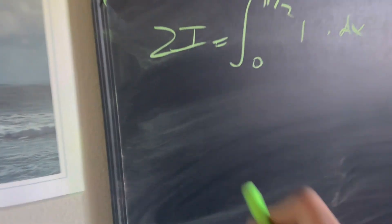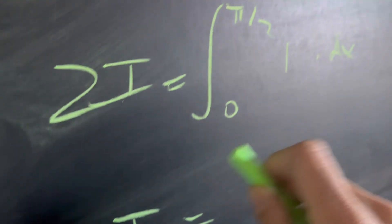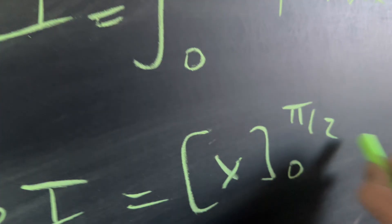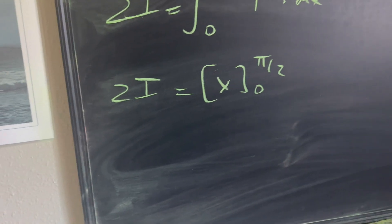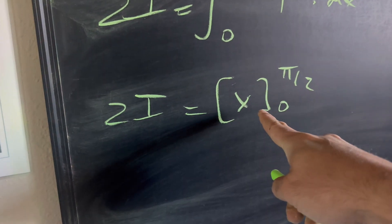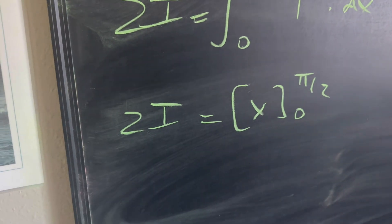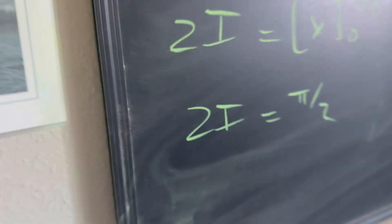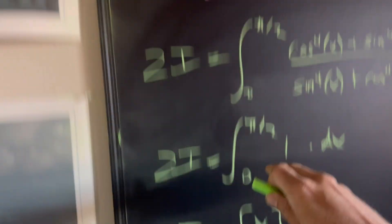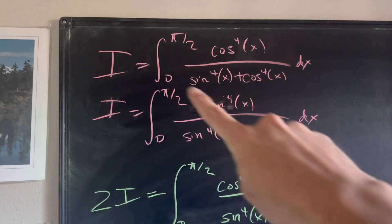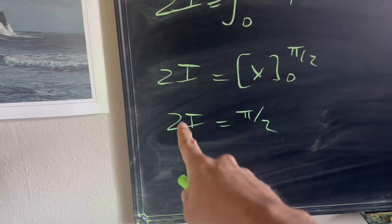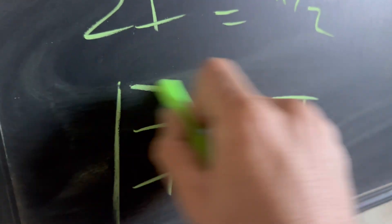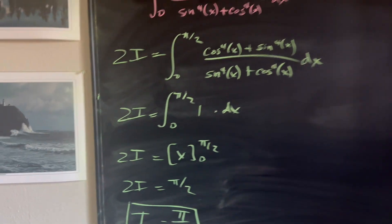So we have 2i is now equal to the integral from 0 to pi over 2 of just 1 times dx. We can easily solve this. We have 2i equals x, evaluated from 0 to pi over 2. So we can go ahead and just use fundamental theorem of calculus, plug in your pi over 2, that's pi over 2 minus, you plug in your 0, that's just 0. So 2i is equal to pi over 2, and remember, i is equivalent to the integral that we're trying to solve for, so all we have to do is just divide the 2 to the other side, and we get that i is equal to pi over 4. This is the power of King's Rule.